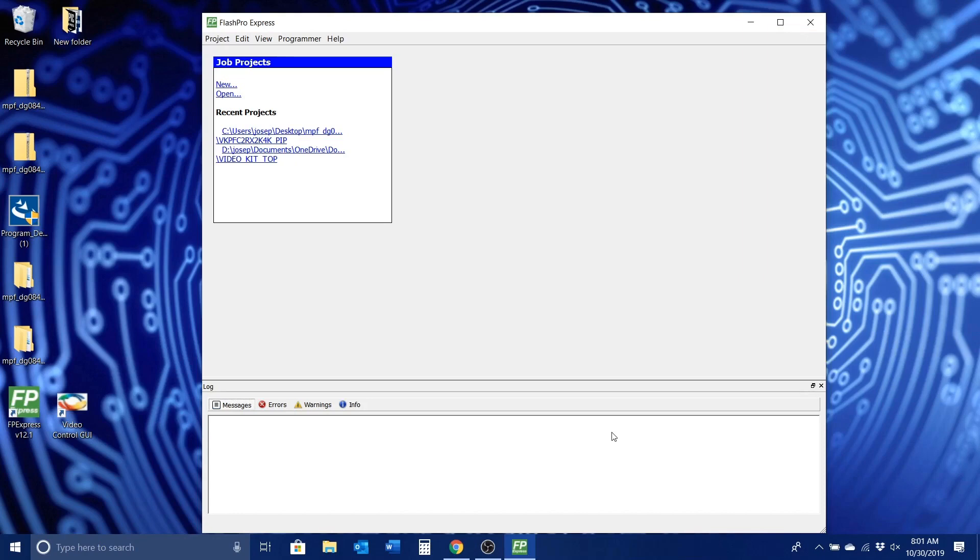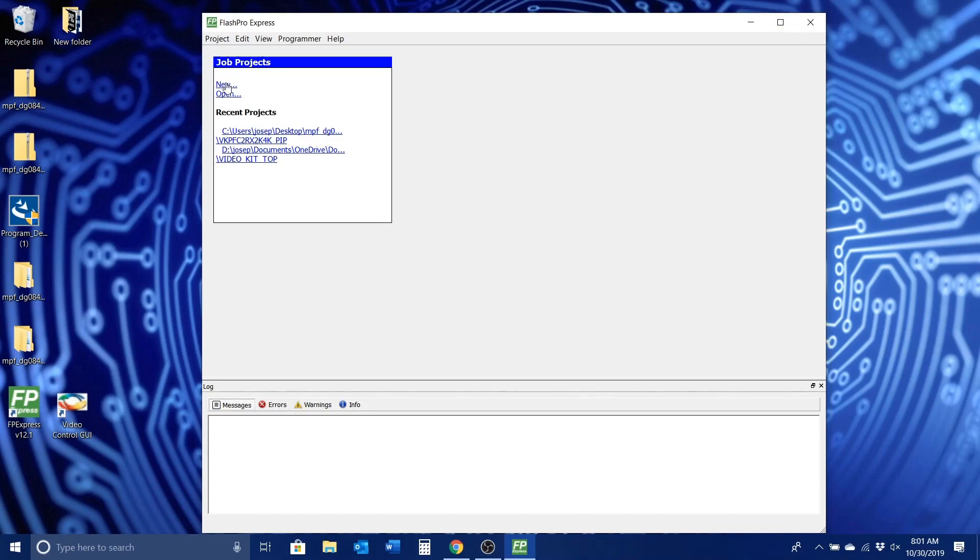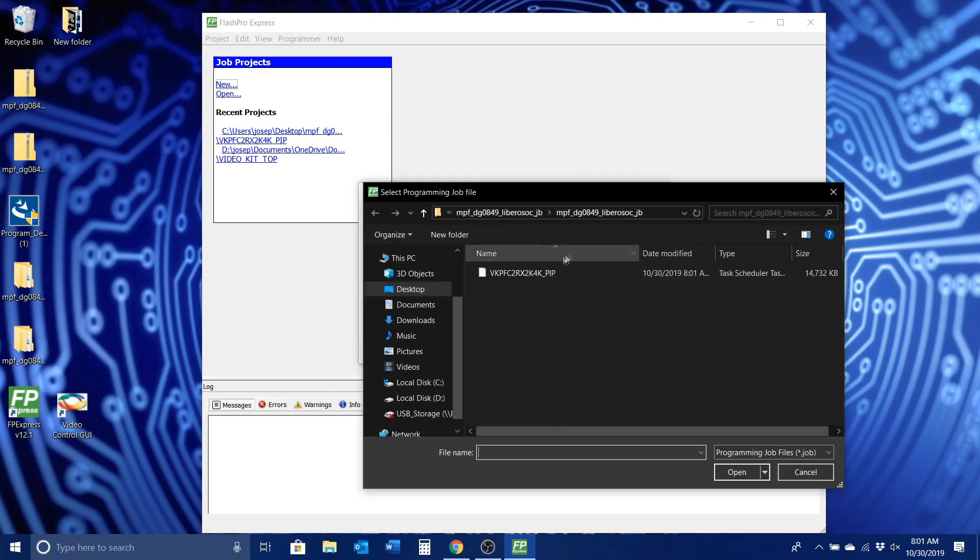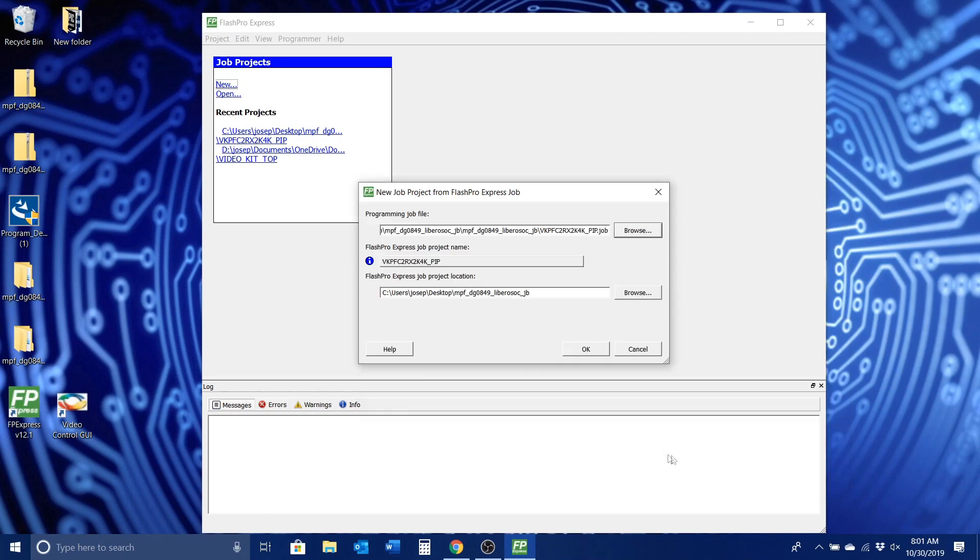Open the Flash Pro Express software. Select New from under the Job Projects box. Click Browse next to Locate the Programming Job file. This will be in the extracted file LibraryOSOC underscore JB. Select the file and click Open. Hit OK.